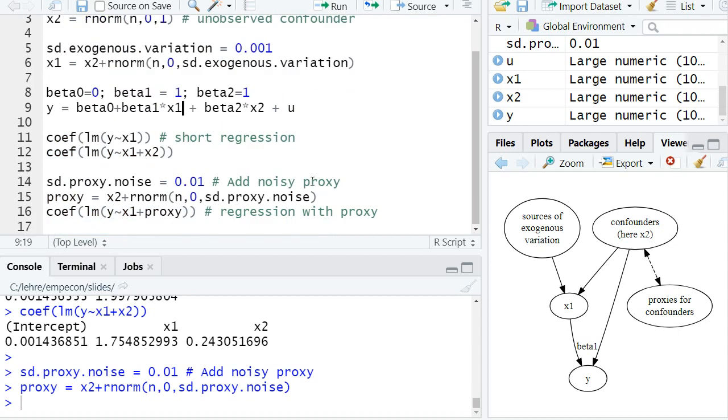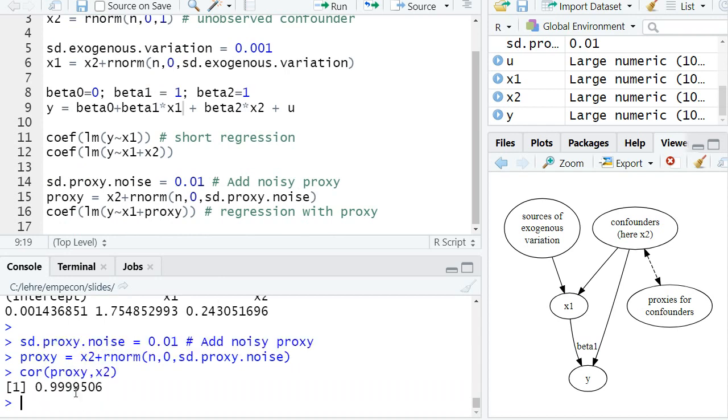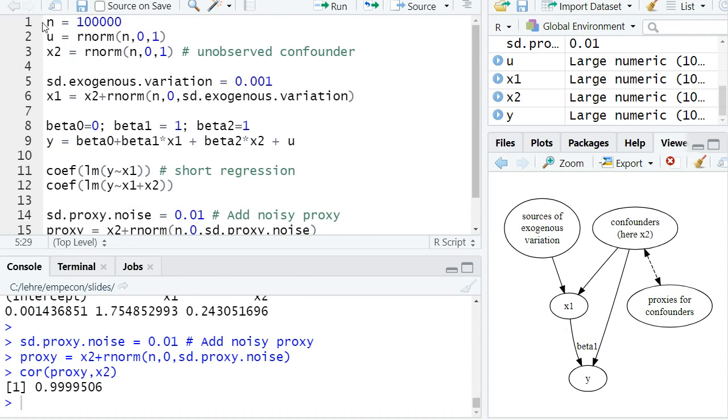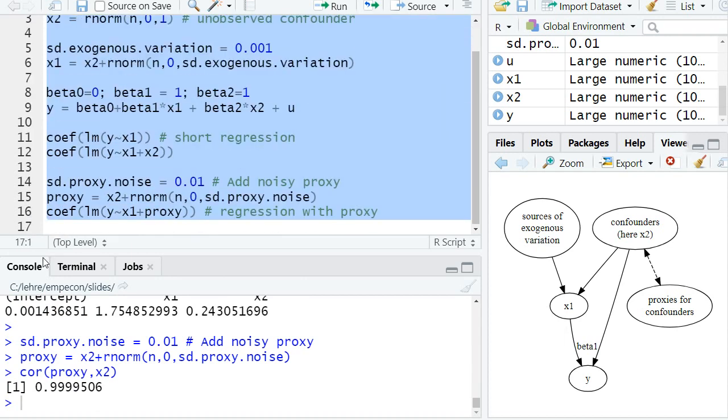Okay, now we have the situation where we have a very precise proxy, so the correlation between the proxy and our unobserved confounders is almost one. But we also have very little exogenous variation in x1, so the standard deviation of the exogenous variation is almost zero in x1.